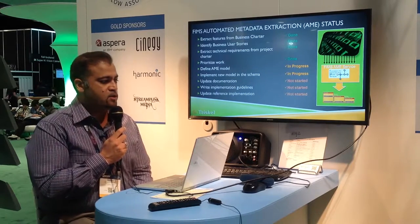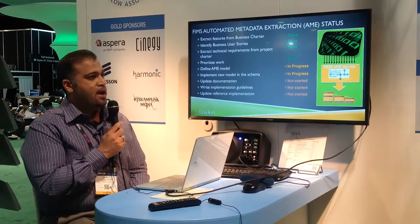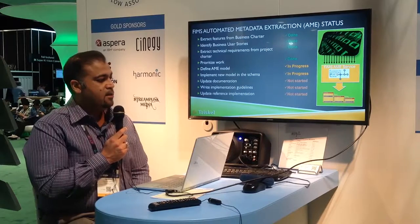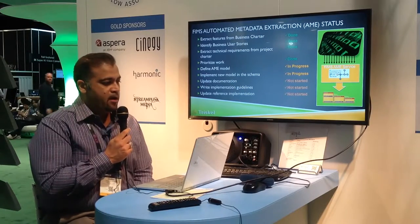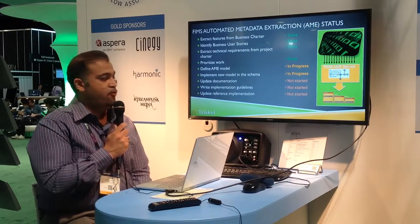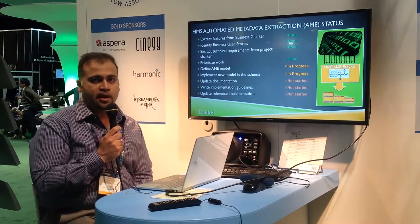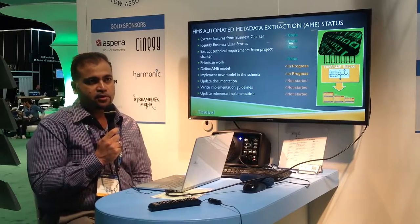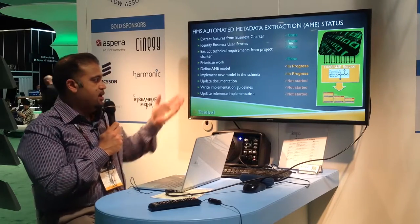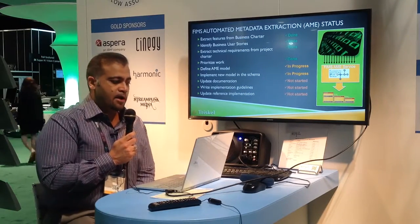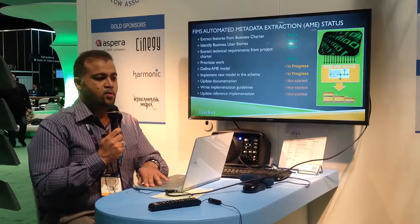The work done for FIMS AME so far included looking at the business charter, defining user stories, extracting technical requirements from the project, and prioritizing work. Where we are right now is hoping to finalize the models for the request, the response, and what the report can look like for AME — at least start coming up with a model that can grow over time and be adopted by various vendors in the AME space. That also includes updating documentation, providing sample guidelines and reference implementations, and getting sign-off from the FIMS chair council.